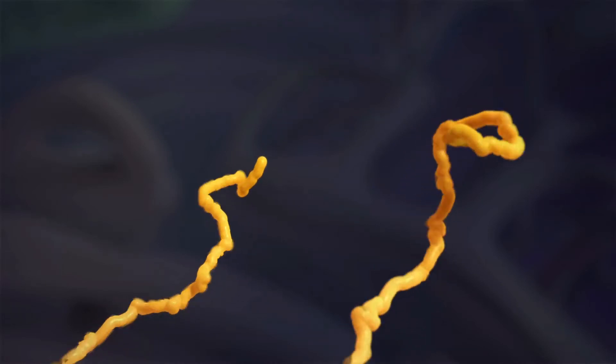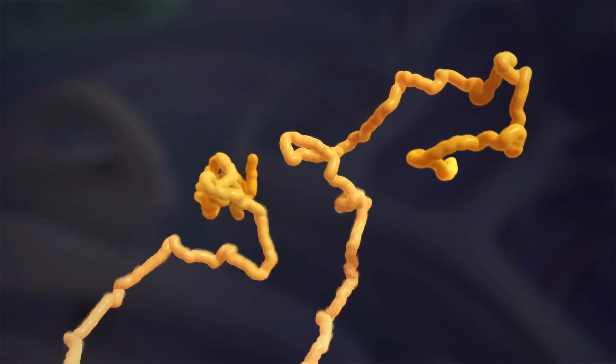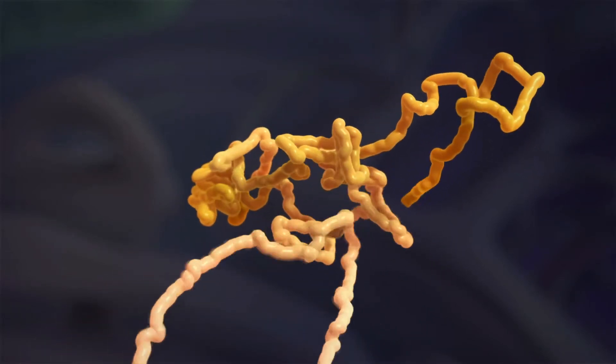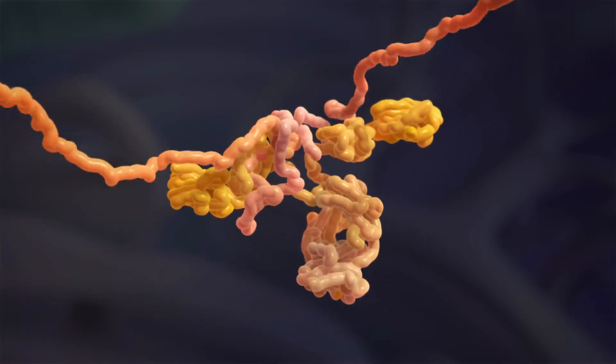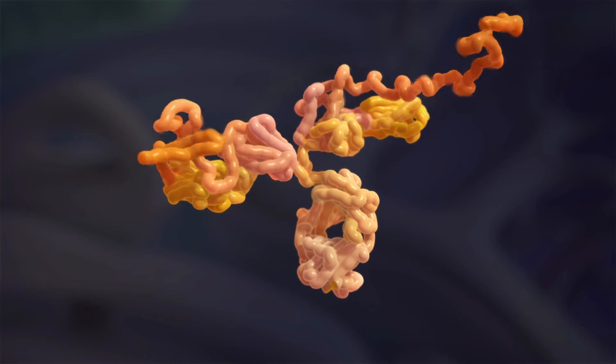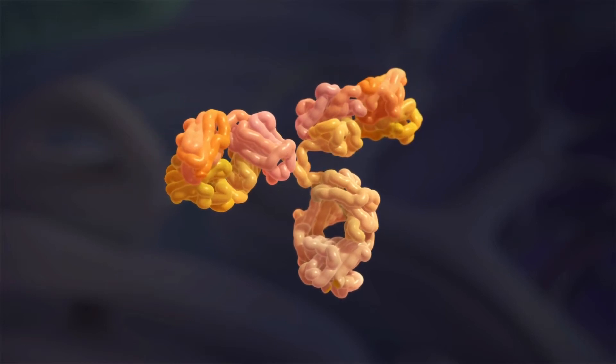Light chain proteins are components of antibodies. Each antibody is made up of four protein molecules, two heavy chains and two light chains which attach to each other before it can function properly.